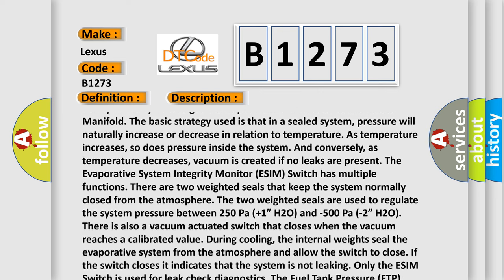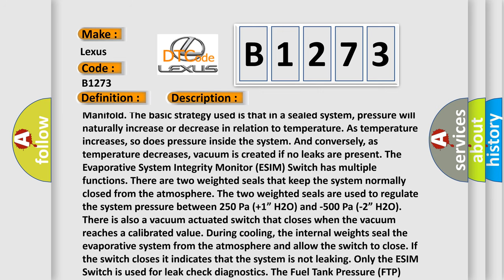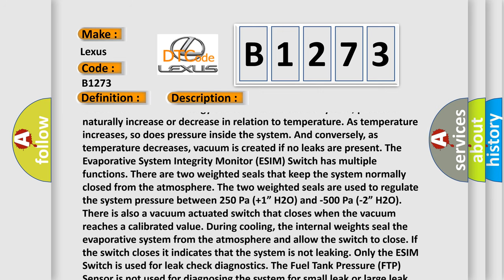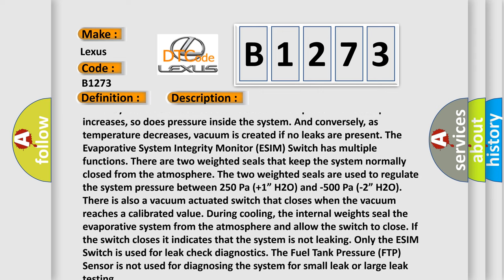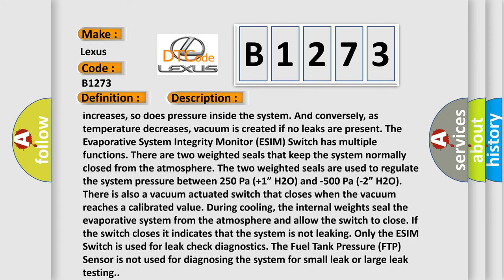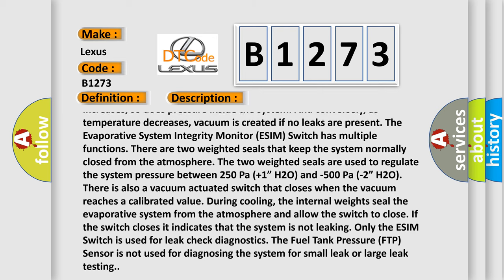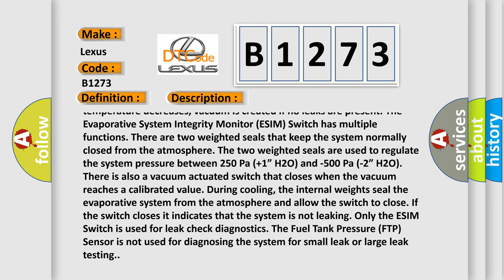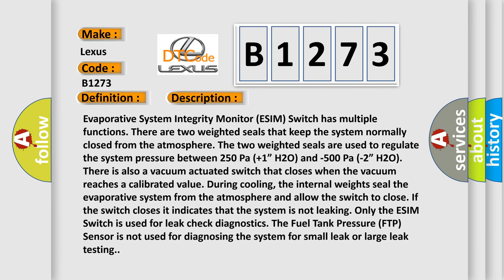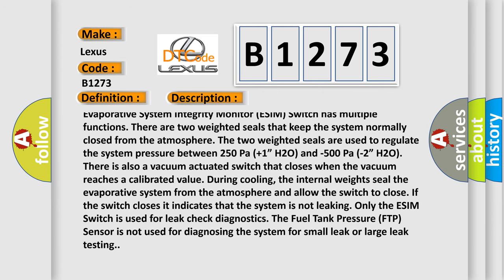The Evaporative System Integrity Monitor (ESIM) switch has multiple functions. There are two weighted seals that keep the system normally closed from the atmosphere. The two weighted seals are used to regulate the system pressure between 250 Pa (+1 H2O) and -500 Pa (-2 H2O).